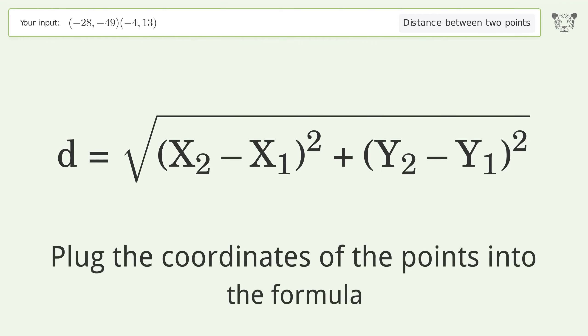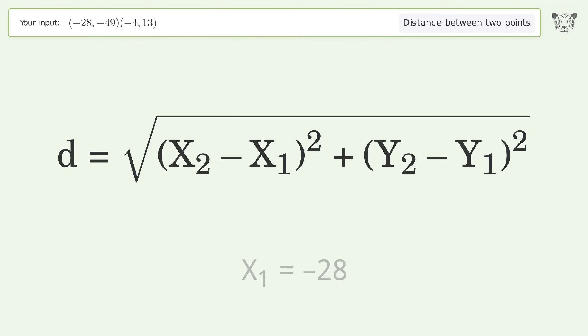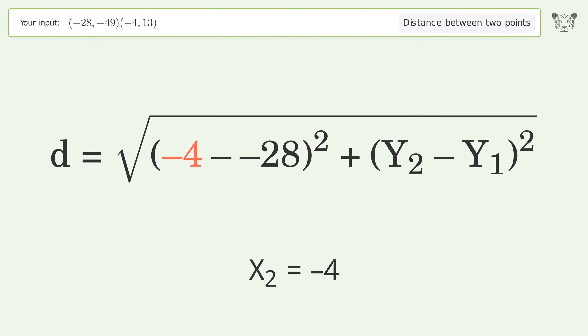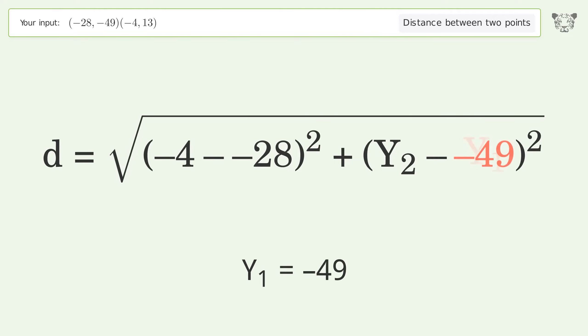Plug the coordinates of the points into the formula: x1 equals negative 28, x2 equals negative 4, y1 equals negative 49, y2 equals 13.